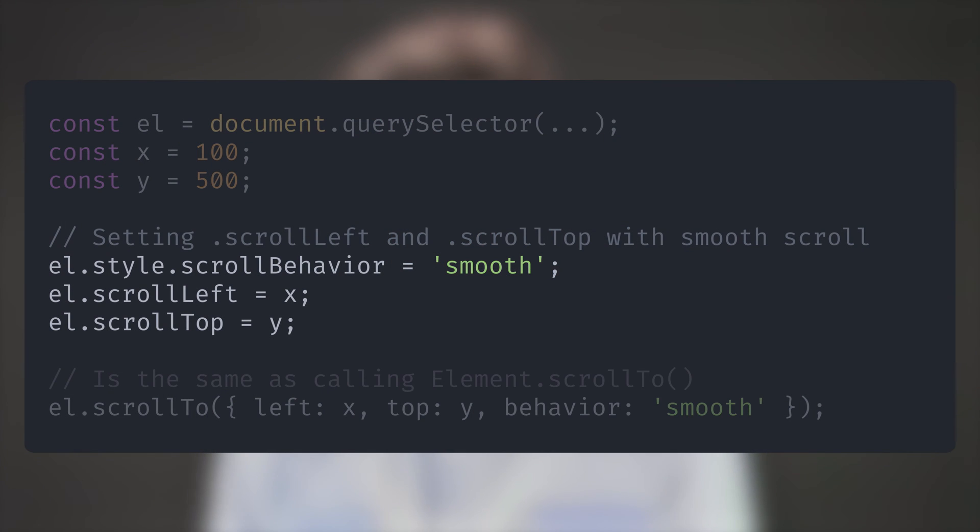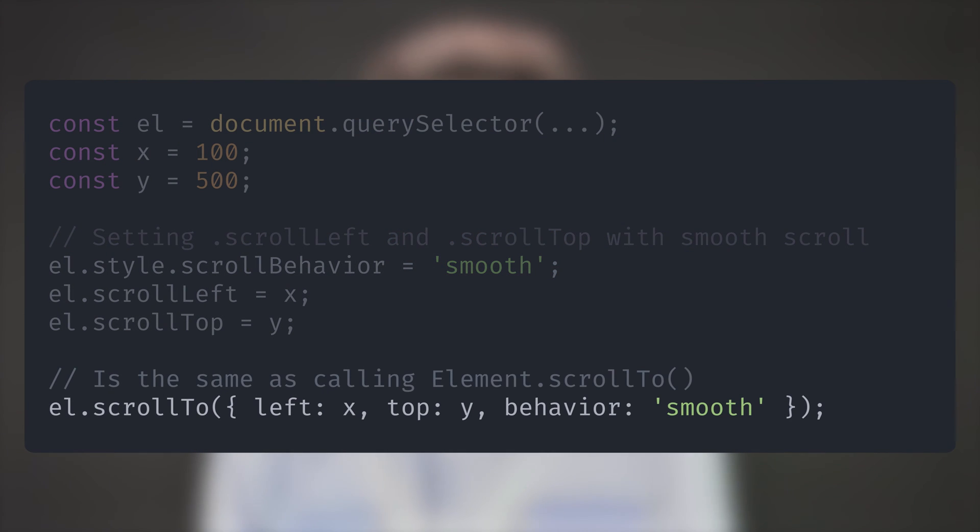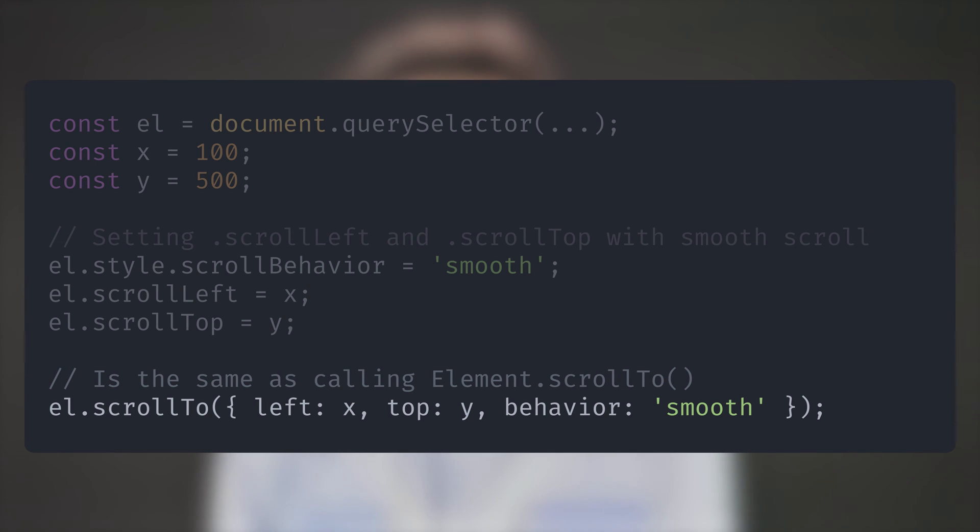Setting the element scrollLeft and scrollTop properties is the same as calling element.scrollTo with the coordinates — it will respect the CSS scroll-behavior of the element. Be aware: if the direction of your element's text is right-to-left, scrollLeft 0 marks the rightmost position of horizontal scroll, and the value decreases as you go left. For a scrollable element with 100 pixels of width and 500 pixels of scrollable width with direction right-to-left, the leftmost position is scrollLeft minus 400.